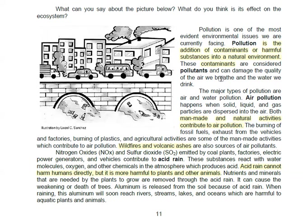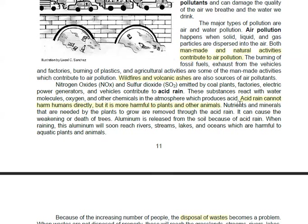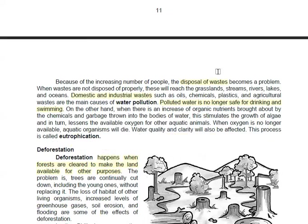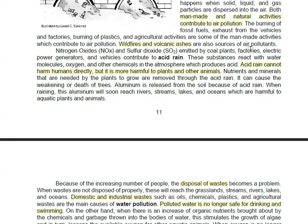You have pollution, of course — this is very familiar. You have air pollution, and one of the effects of air pollution is acid rain. Air pollution can be both man-made and natural. Man-made examples include factories and burning of plastics. Natural examples include volcanic ash from volcanic eruptions. Those can all become air pollutants.